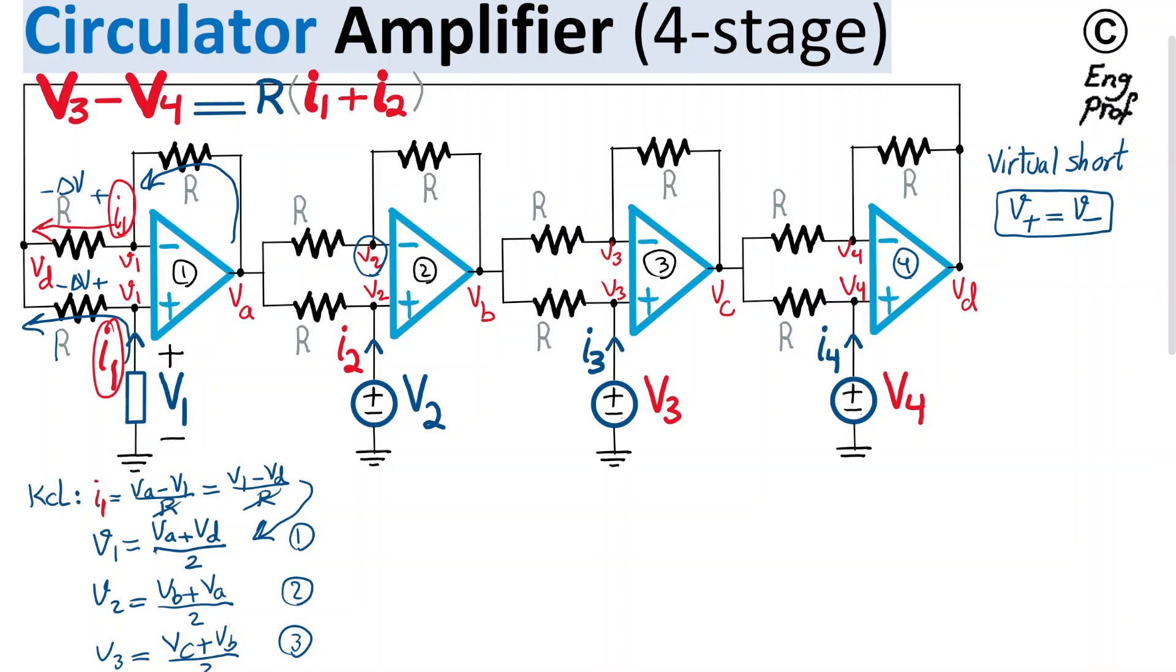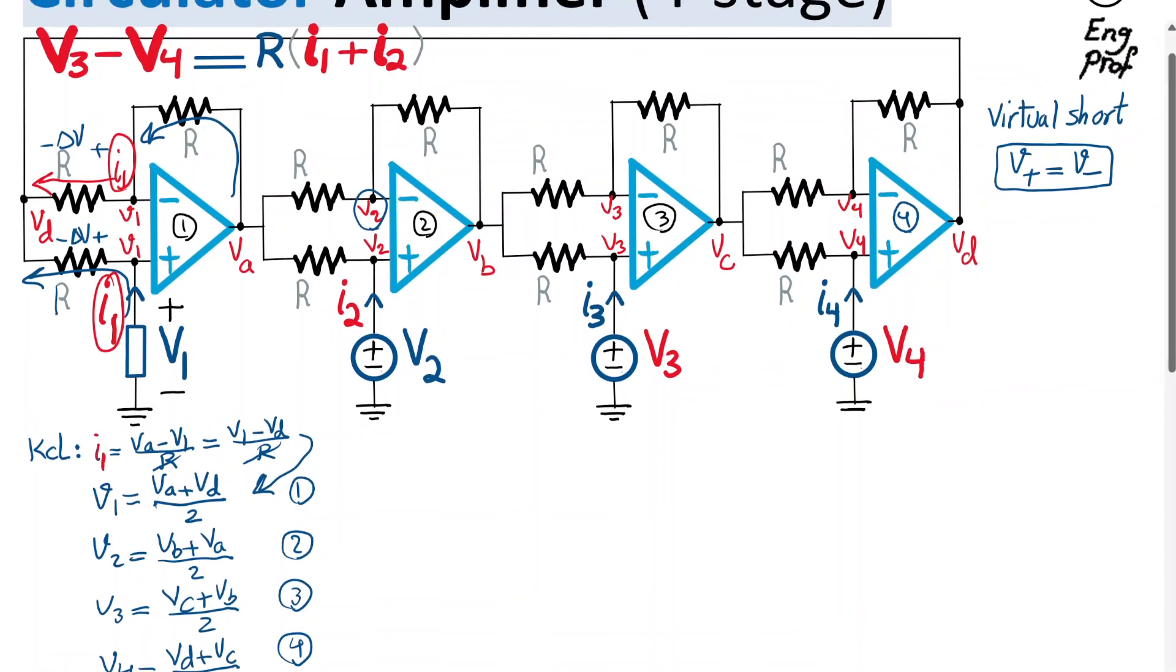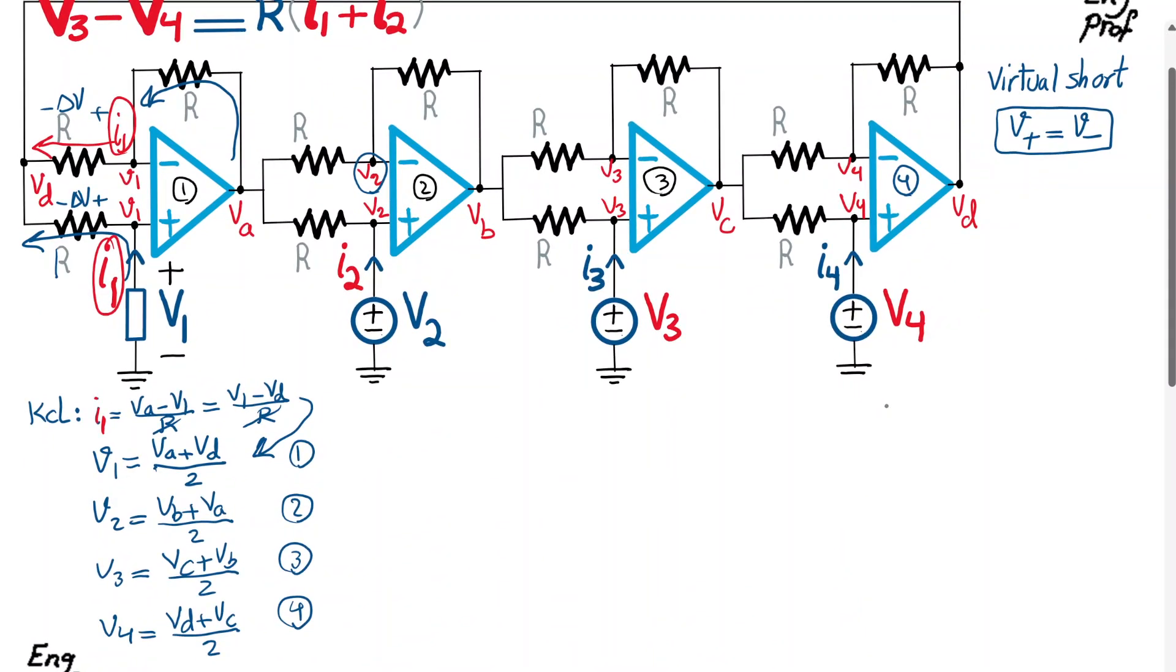And I can write another set of equations by saying that I1, so VA minus VD, the two voltages that we have here, VA and VD should be equal to resistor R in series with resistor R, so two R times I1. So therefore, I can write VA minus VD is equal to two R times I1.